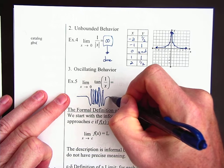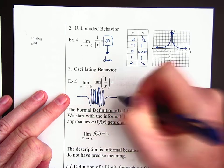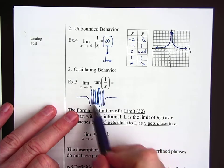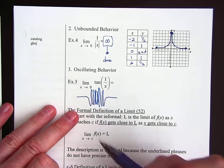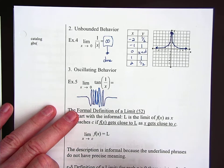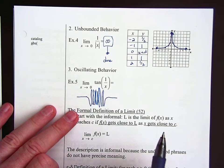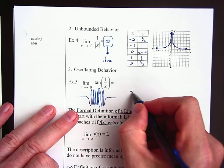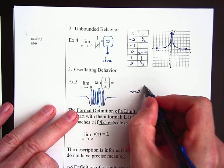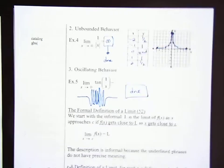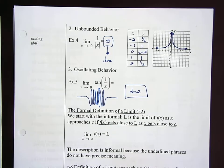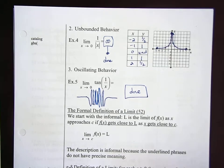If you zoom in and keep zooming in on zero, it just keeps going back and forth — you can't narrow it down to a specific number. When you have oscillating behavior like that and you keep zooming in, it doesn't change. That limit also does not exist.